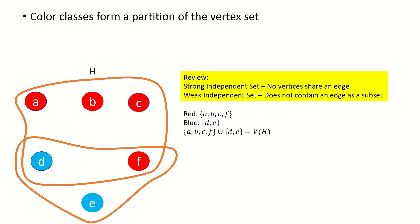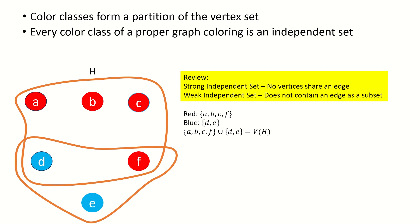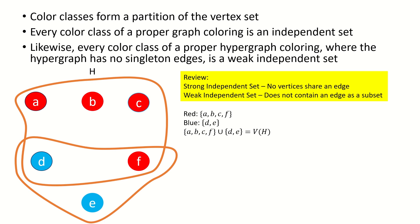Using this information, we can make a connection between graph colorings and hypergraph colorings. In graph theory, each color class of a proper coloring is an independent set in the graph theoretic sense, because vertices of the same color are not adjacent. This carries over nicely to hypergraphs: every color class of a proper hypergraph coloring is a weak independent set, as long as the hypergraph doesn't have edges of size 1. This is because no edge is monochromatic in a proper hypergraph coloring, meaning edges of size at least 2 cannot be subsets of any color class.